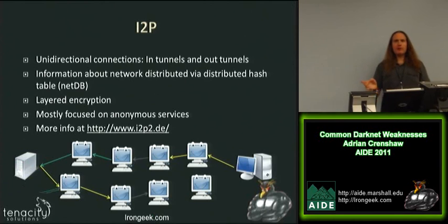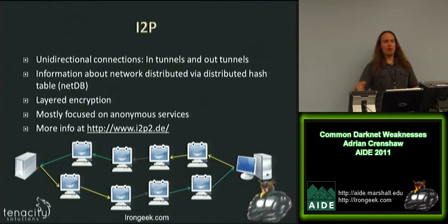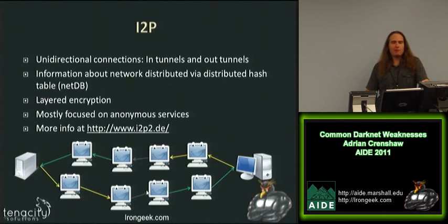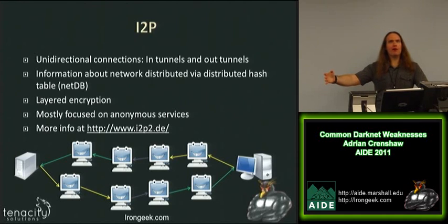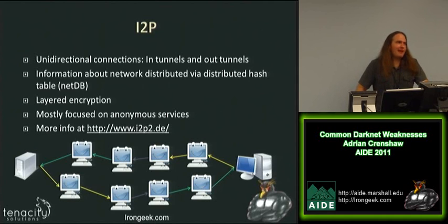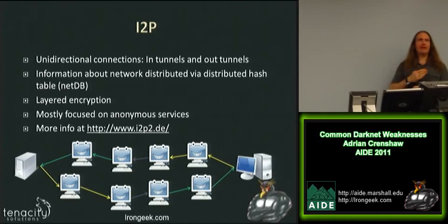I2P is a little bit different. It uses one-directional tunnels — you have in-tunnels and out-tunnels. Your out-tunnel eventually goes into someone else's in-tunnel. I2P allows you to make compromises between latency and anonymity: the more hops you have, the more anonymous you'll be, but the longer it will take. Traffic comes back in a different direction, which makes some traffic analysis attacks a lot harder. These one-way tunnels complicate things greatly as far as doing traffic analysis.